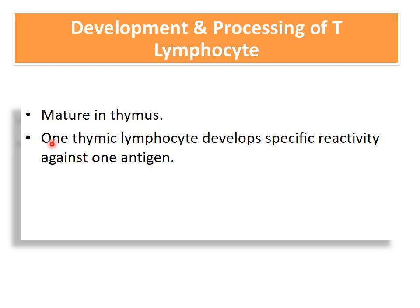During maturation and education in the thymus, each thymic lymphocyte develops specific reactivity against only one antigen. They divide rapidly in the thymus and develop extreme diversity — one T lymphocyte develops specificity against one antigen, while the next develops specificity against another antigen, forming thousands of specific T lymphocytes.